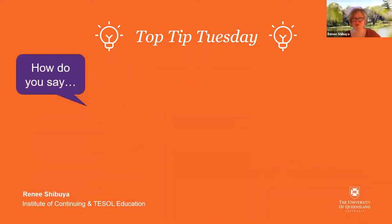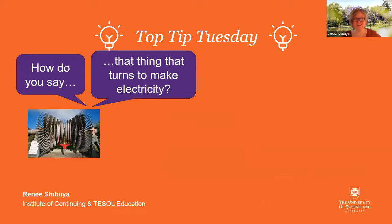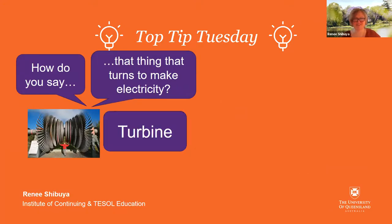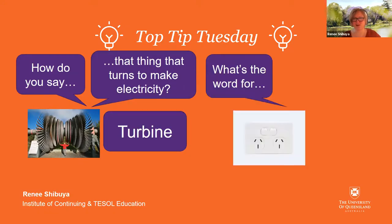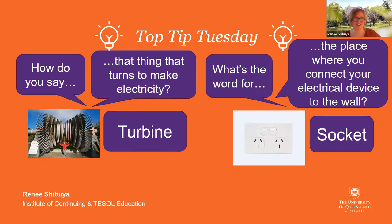You can also add small phrases like: 'How do you say that thing that turns to make electricity?' — It's a turbine. 'What's the word for the place where you connect your electrical device to the wall?' — It's a socket.